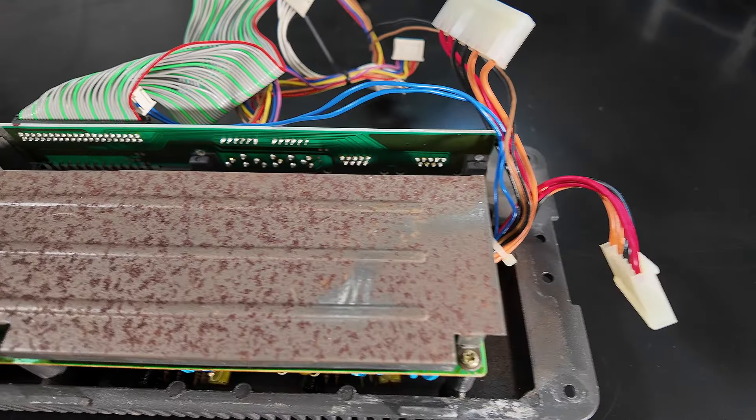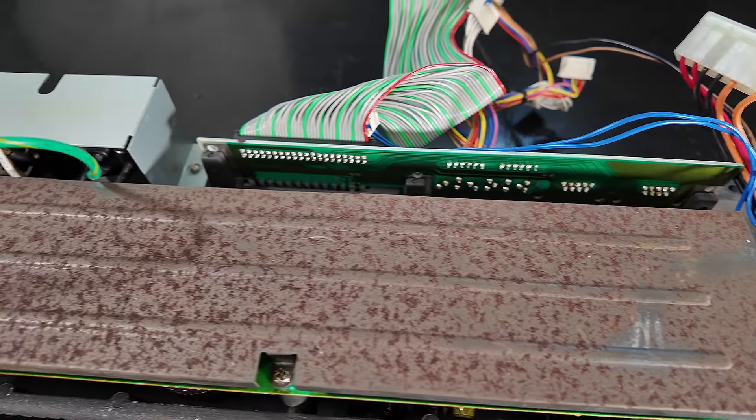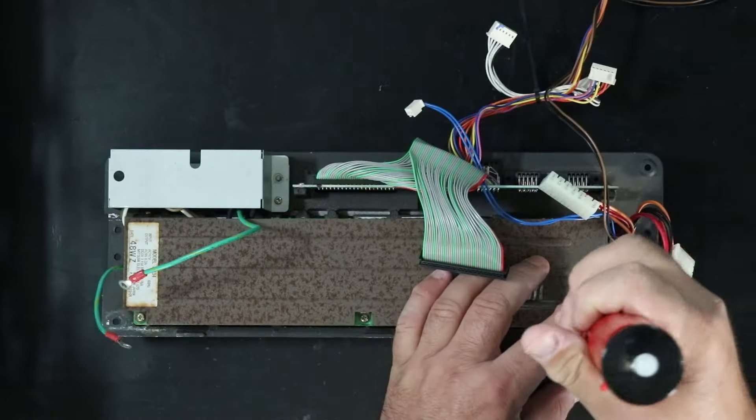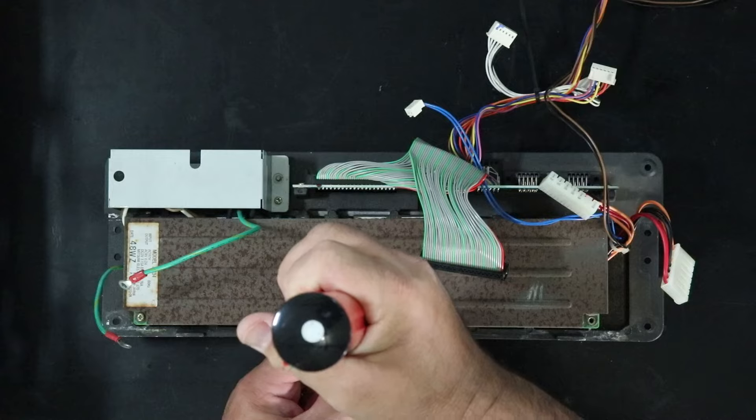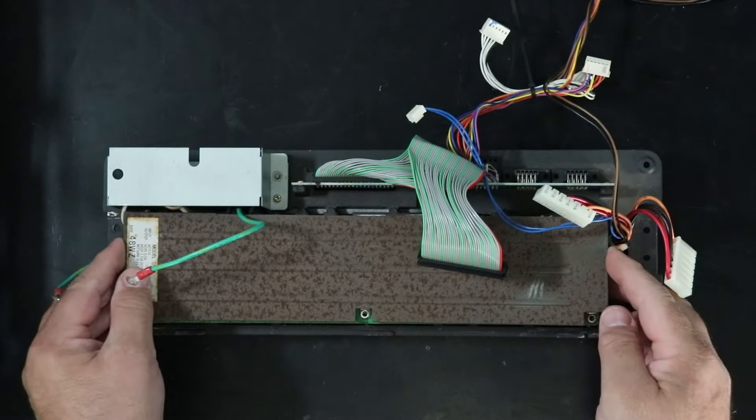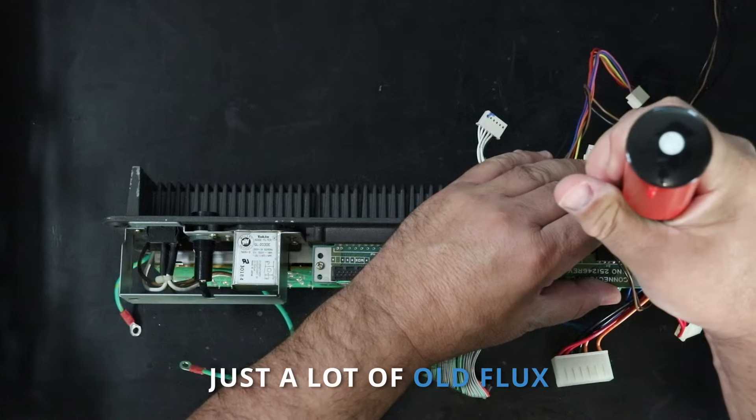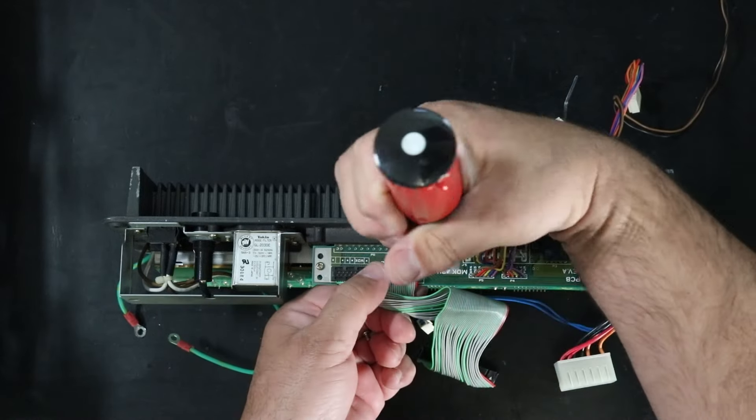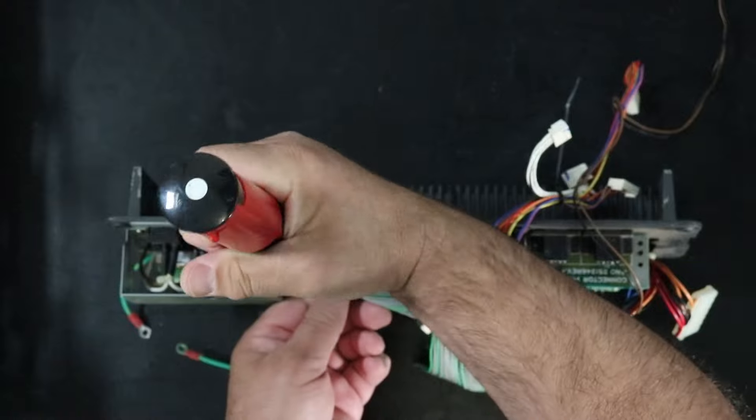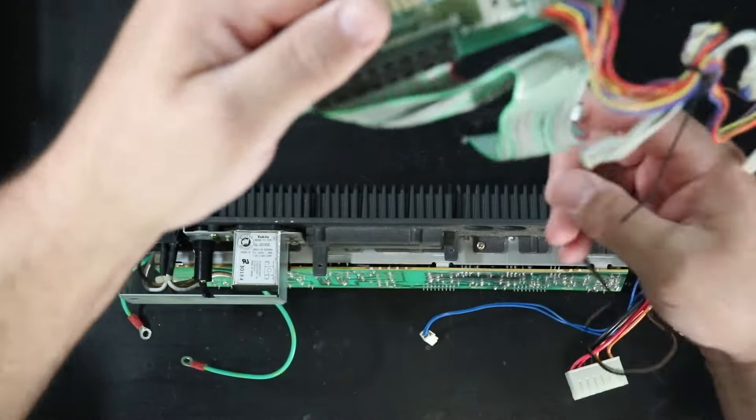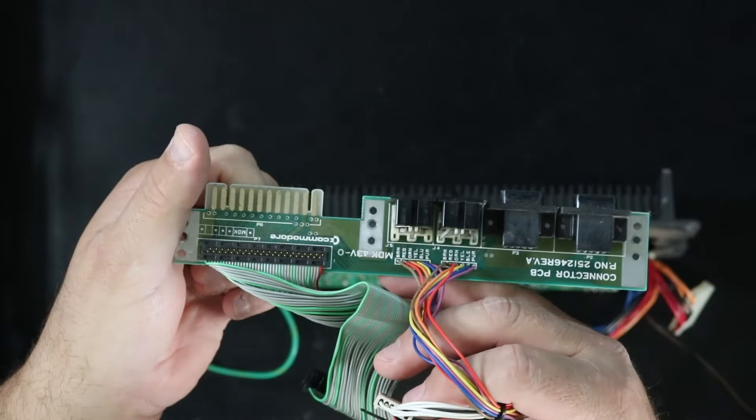The first thing I noticed after removing the power supply was the extreme rust on the RF shield. Man, this thing is nasty. After removing three screws, it just slides to the side to remove. Fortunately, the board doesn't look like it was exposed to as much moisture as the RF shield. To remove the power supply board, you first have to remove the connector PCB that has the user port, joystick ports, serial port, and video out port. The board looks to be in pretty good shape, but we'll have to do a modification to it before reinstalling.